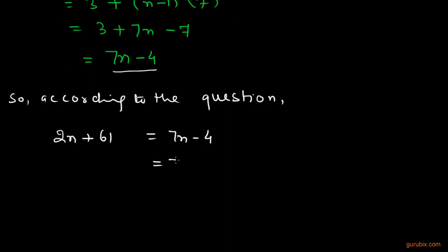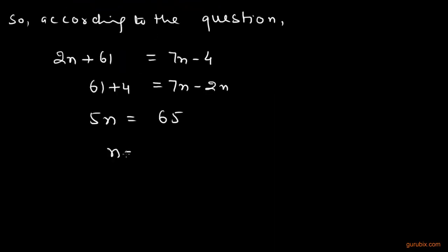This is 7n minus 2n, and 61 plus 4. Therefore 5n equals 65, and therefore n equals 13.